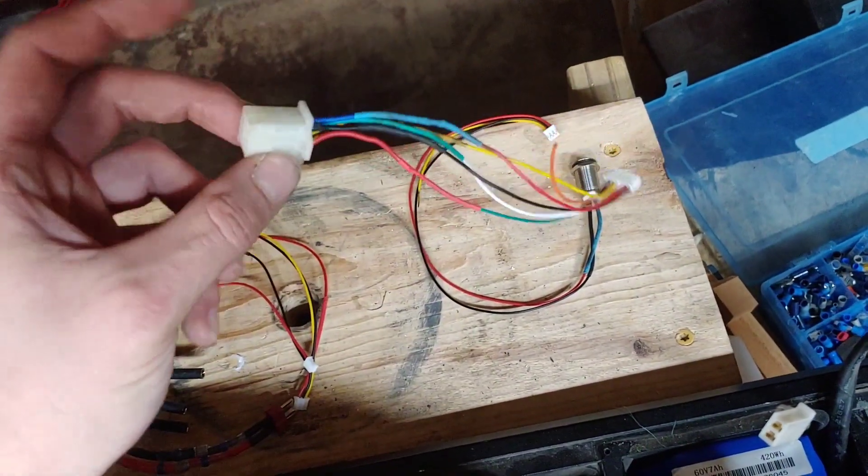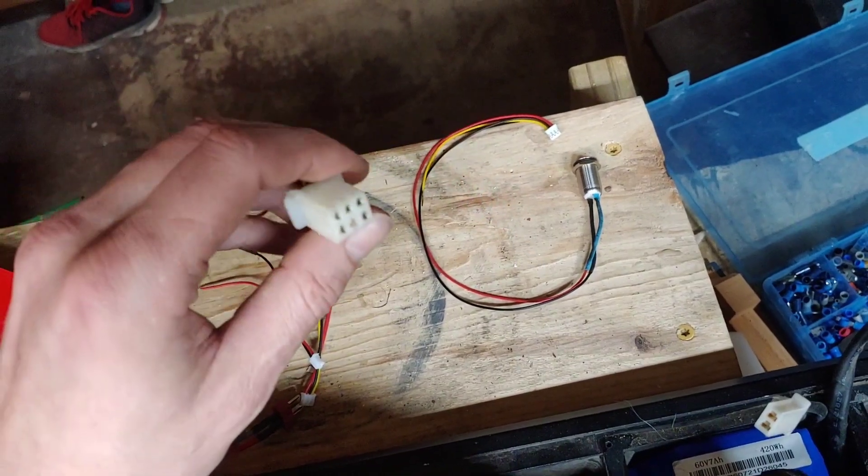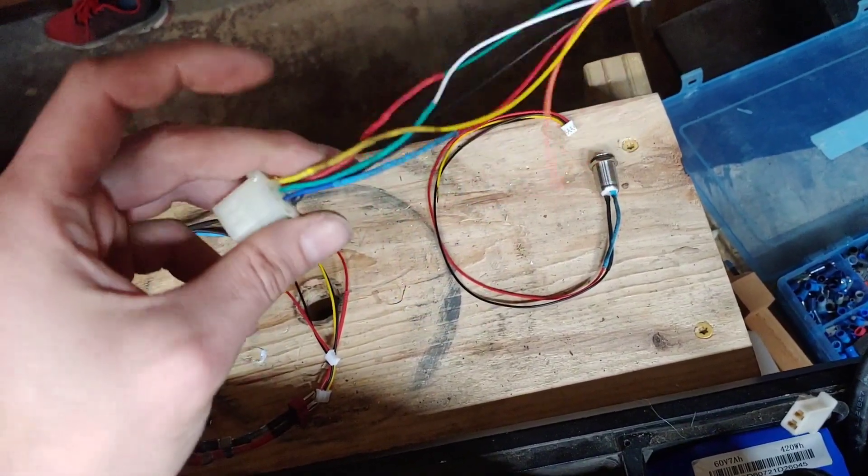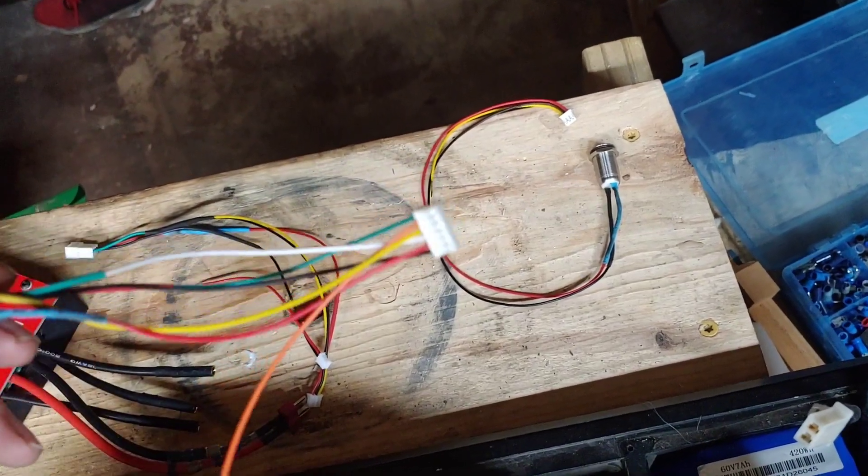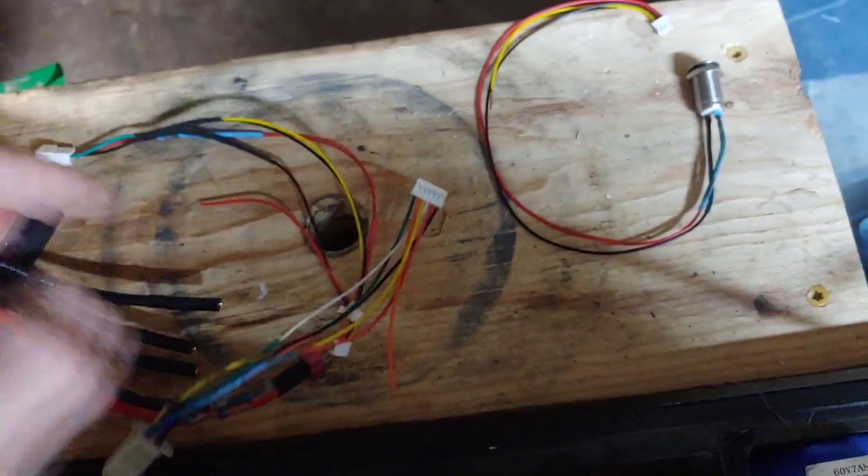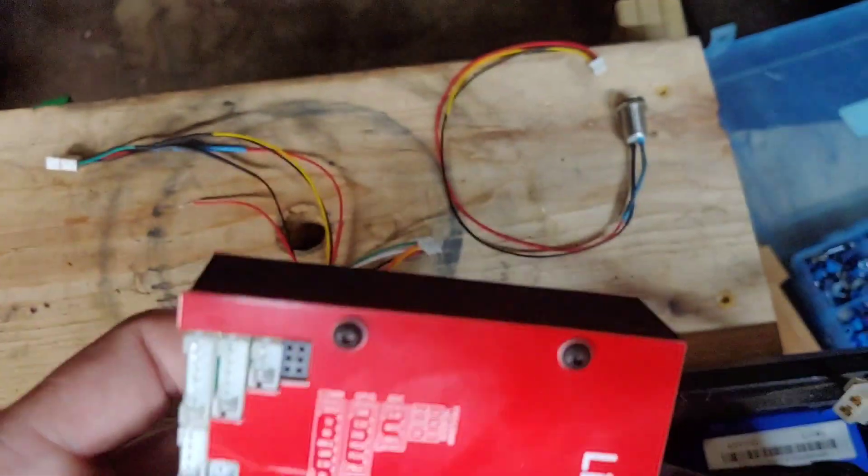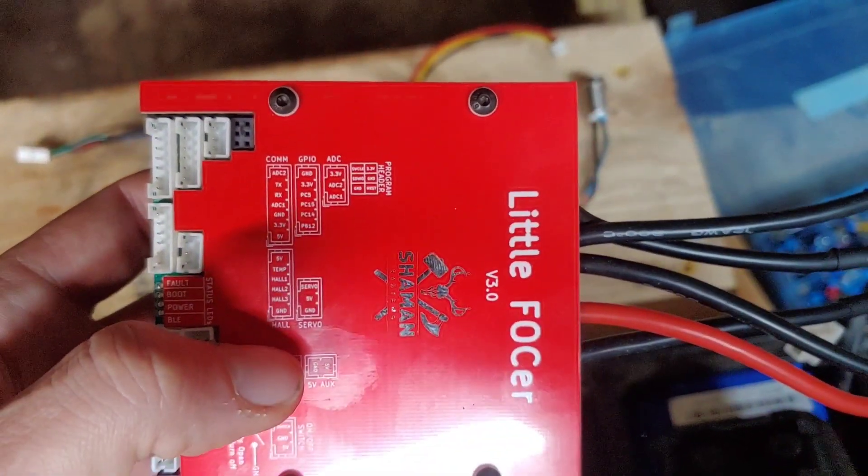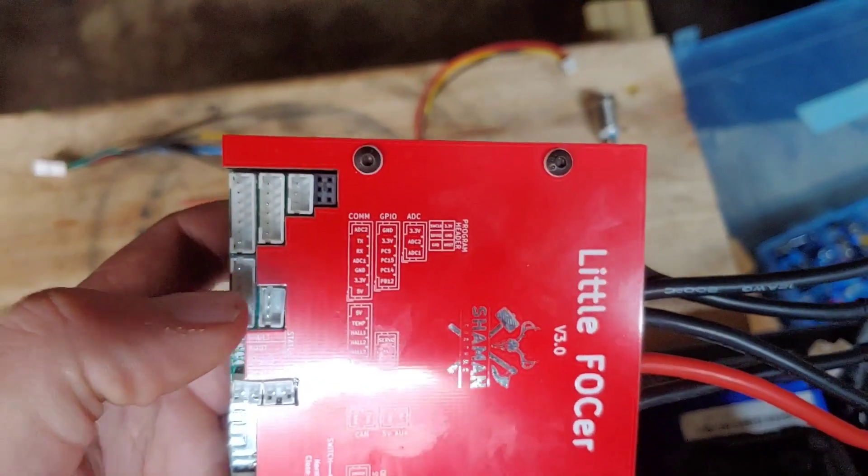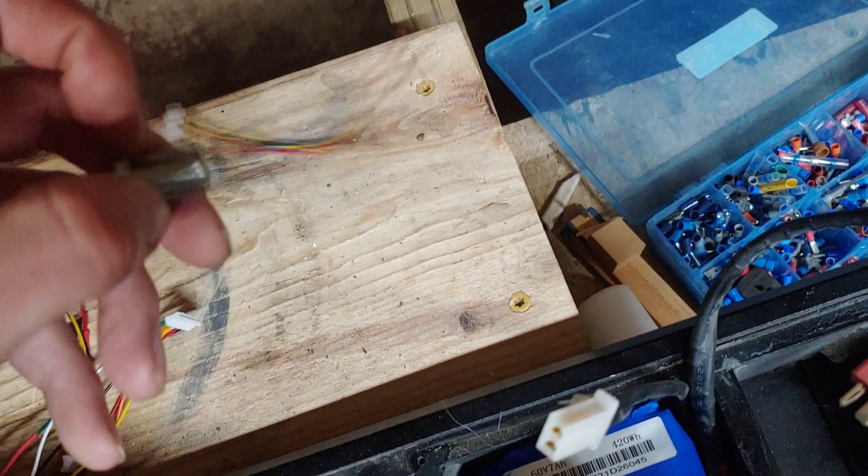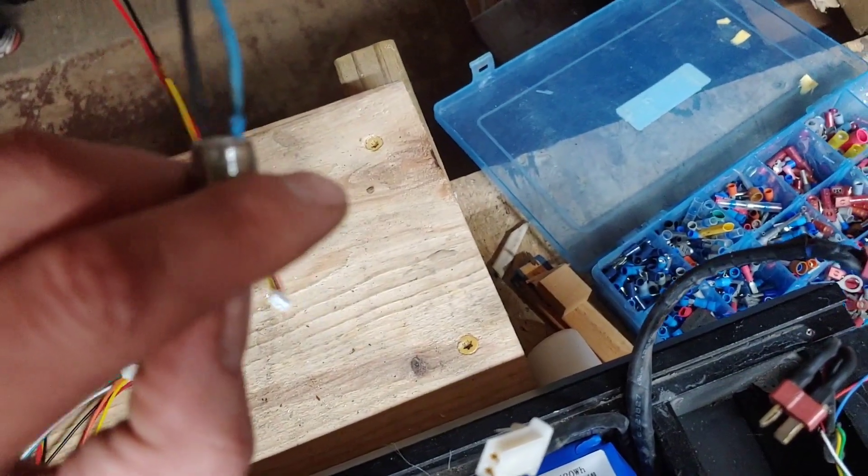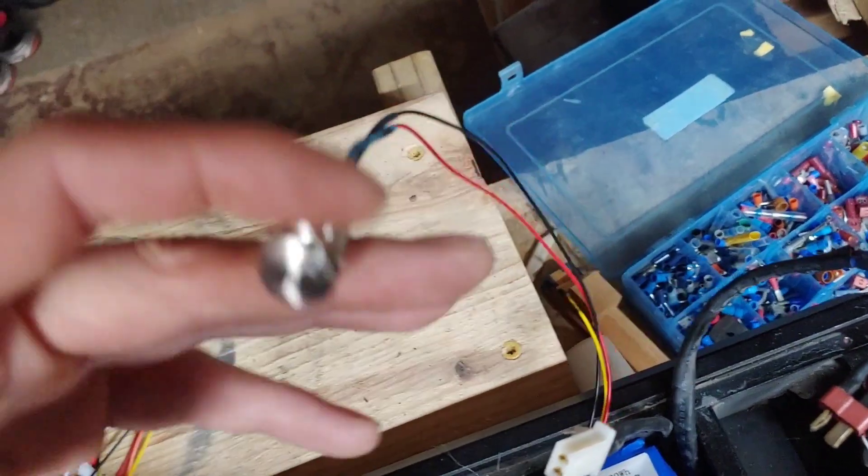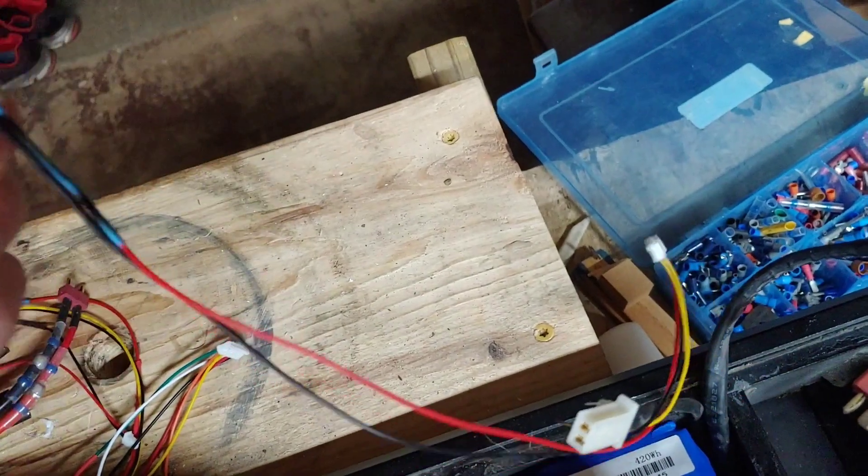This is the hall sensor connector that normally clips into the trotter which I have connected through to this which connects into the hall port right here. And then I had to wire up a latching power switch unlike the momentary normally open that the trotter comes with.